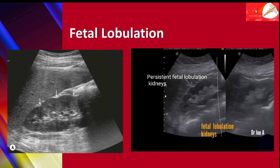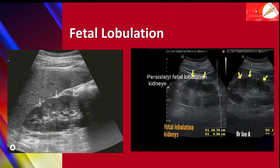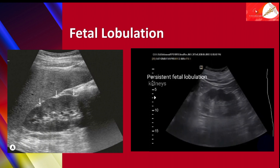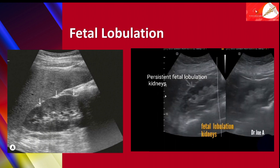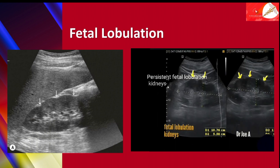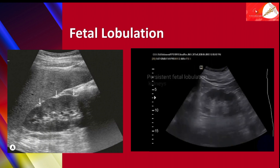Again, in this GIF image of an ultrasonograph, you can see persistent fetal lobulations, with arrows marking and indicating the indentations on the renal surface.